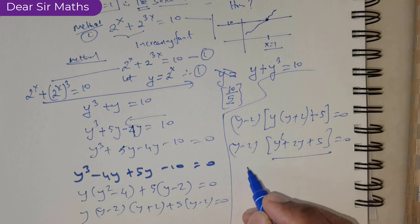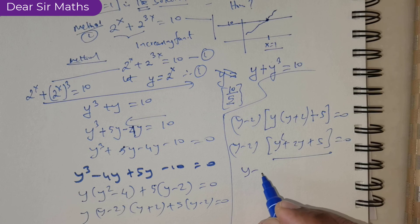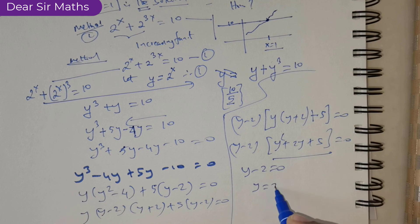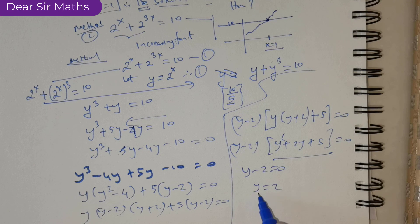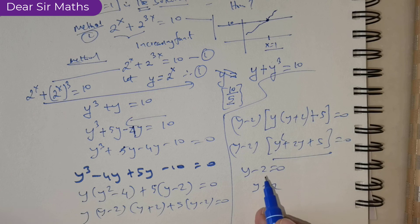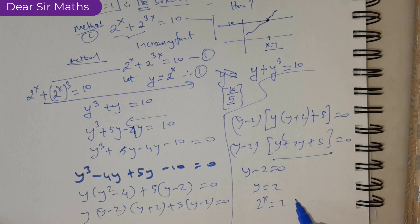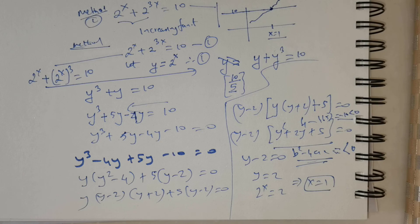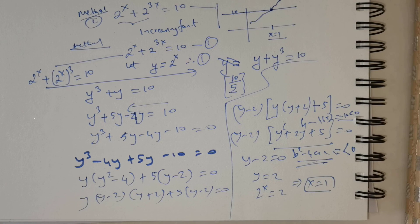The factor y squared plus 2y plus 5 would give complex solutions. So y minus 2 equal to 0 means y is equal to 2. Since y equals 2 raised to the power of x, we have 2 raised to the power of x equals 2, which means x is equal to 1. Have a nice day, take care.